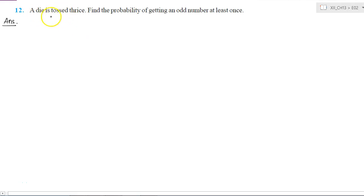In this question, it is given that a die is tossed thrice and we have to find the probability of getting an odd number at least once.